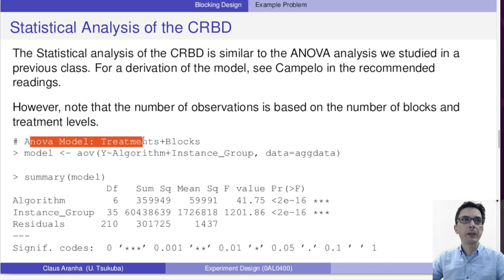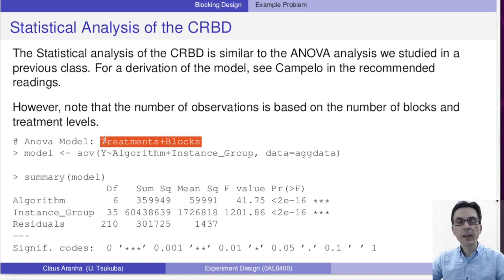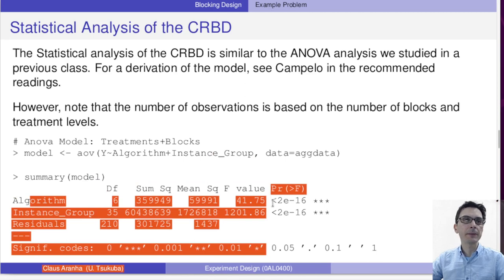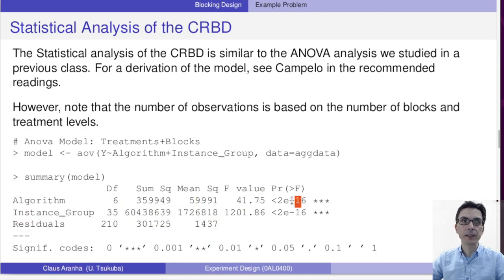So here we have an ANOVA model, which is treatment plus blocks. This plus indicates that this is an additive model. Our model is an analysis of variance model of y by algorithm times instance group, and the data is the data that we calculated. When we see the summary of the model, we have the information, and we see that the ANOVA here indicates that there seems to be a significant effect for the algorithm and also for the group.